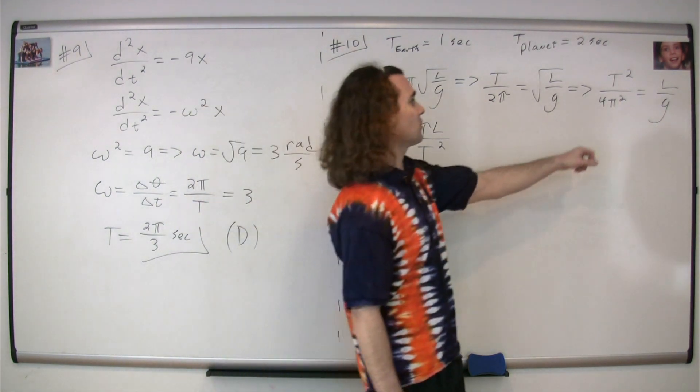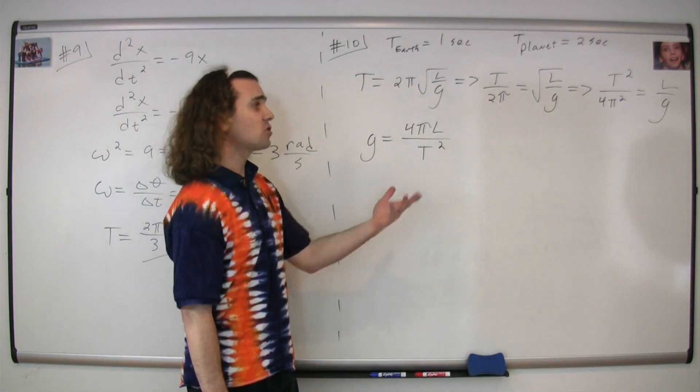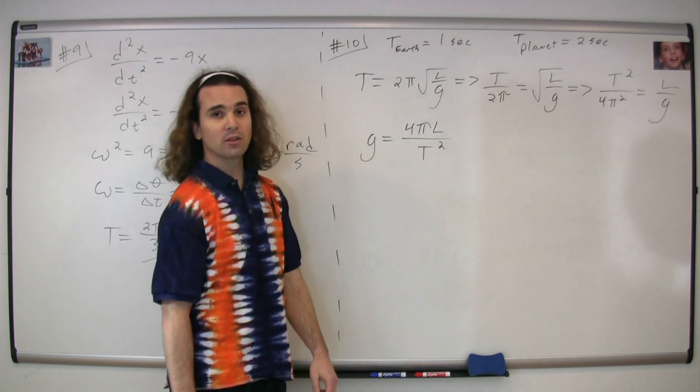Square both sides, then you get T² over 4π² equals L over g. Solving for the acceleration due to gravity, you get g = 4πL over T².